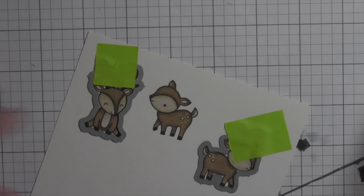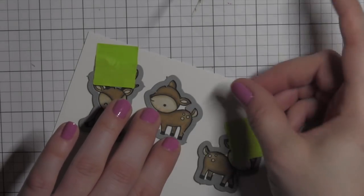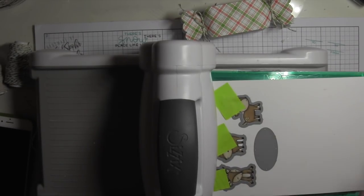I'm going to take the coordinating dies from Cheery Christmas and Toboggan Together. Line those up. Use a little post-it tape or a low tack tape to hold those in place and run them through my Sizzix Big Shot.